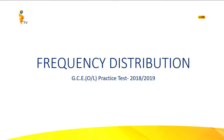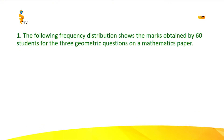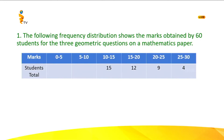First we'll discuss the question which appears in the 2018 past paper. The question is: the following frequency distribution shows the marks obtained by 60 students for the three geometric questions on a mathematics paper. This is a very familiar thing for you all because there are geometric questions in your maths paper, and here they have given the marks obtained by 60 students. Now this is the table, and you can see it is an incomplete table.